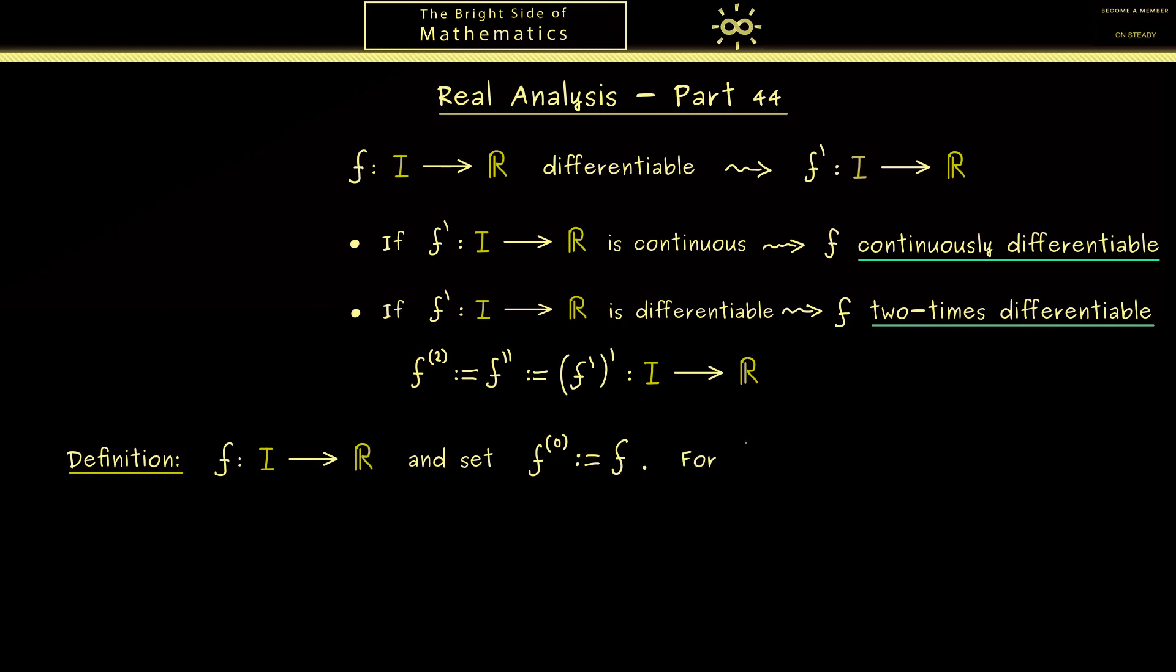You see this immediately because now we define for every natural number n the term n times differentiable. In order to do this we need to define the nth derivative. And you see we immediately get the definition inductively. Which means by starting with the 0th derivative we get all the other ones. Then of course we call the function f n times differentiable if the nth derivative exists. So you see this is indeed the same thing we have done before. Or in other words inductively it means the n-1th derivative is differentiable.